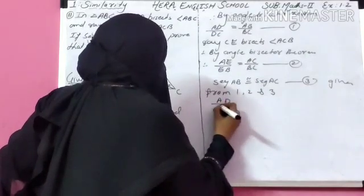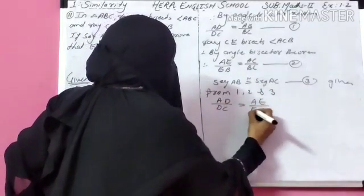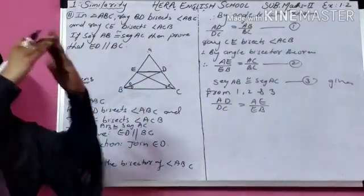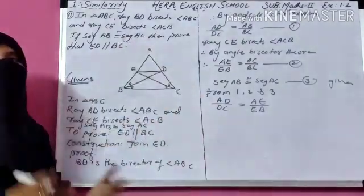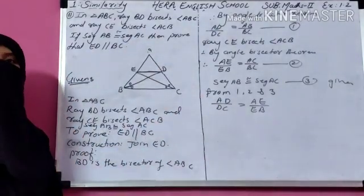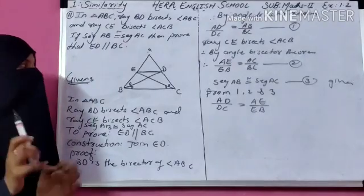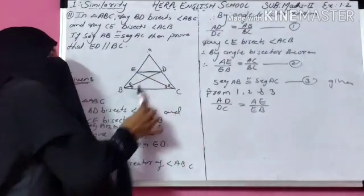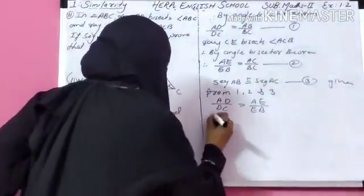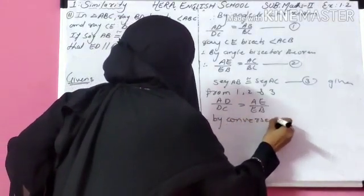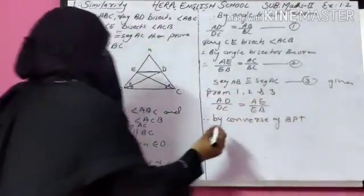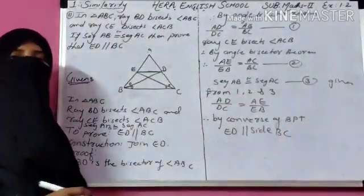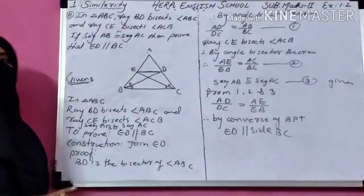From equations 1, 2, and 3: AD upon DC equals AE upon EB. Since a line divides two sides of a triangle in equal ratio, that line is parallel to the third side — that is the converse of BPT theorem. Therefore, by converse of BPT, ED is parallel to BC. Here we have completed exercise 1.2. Try to solve this exercise.